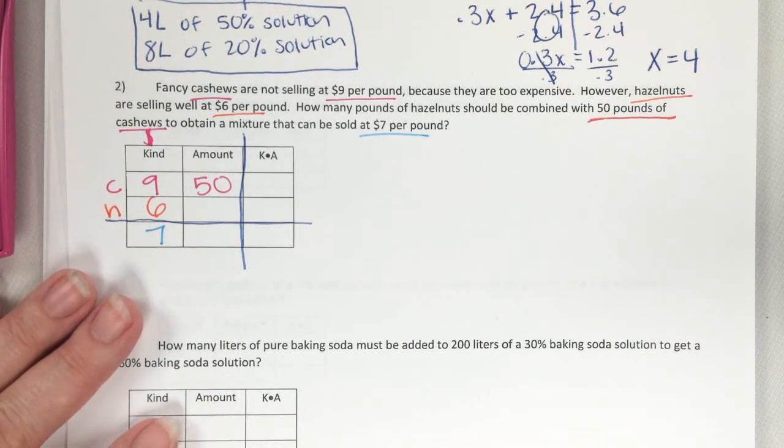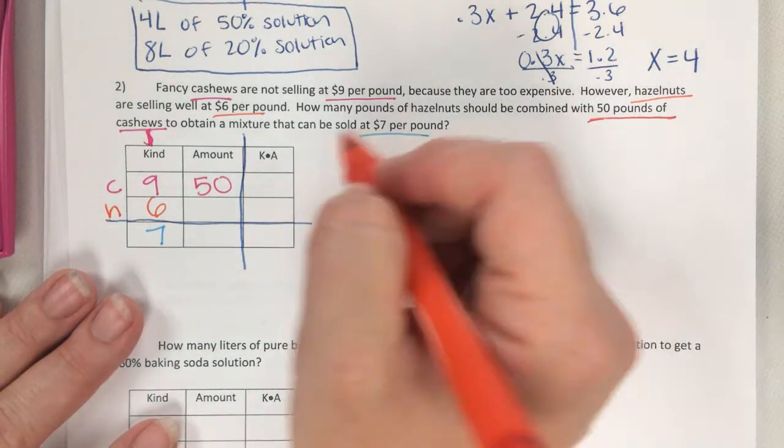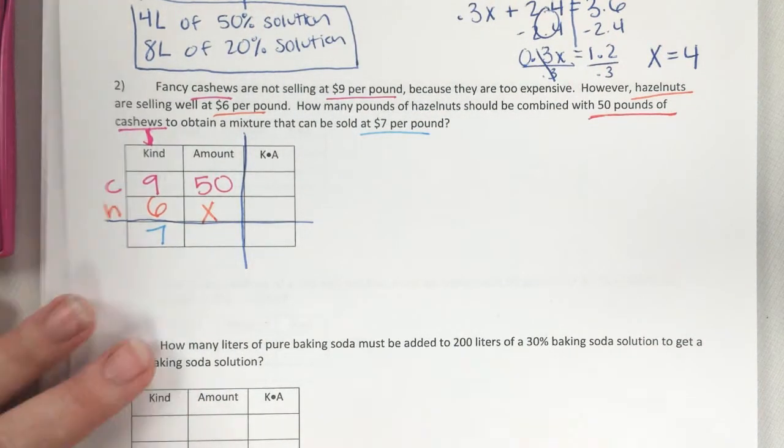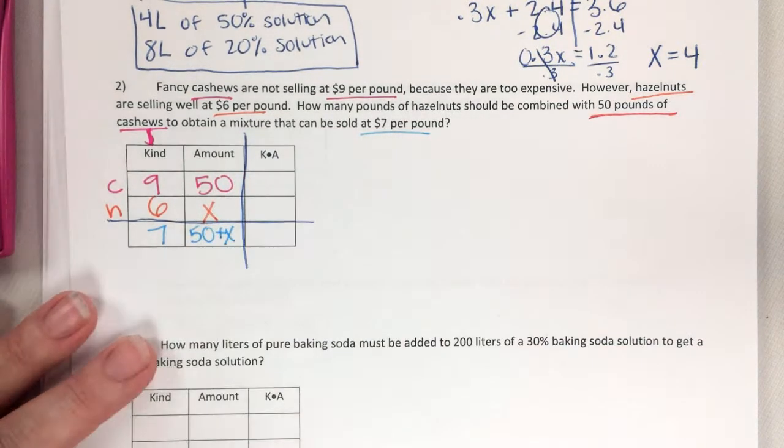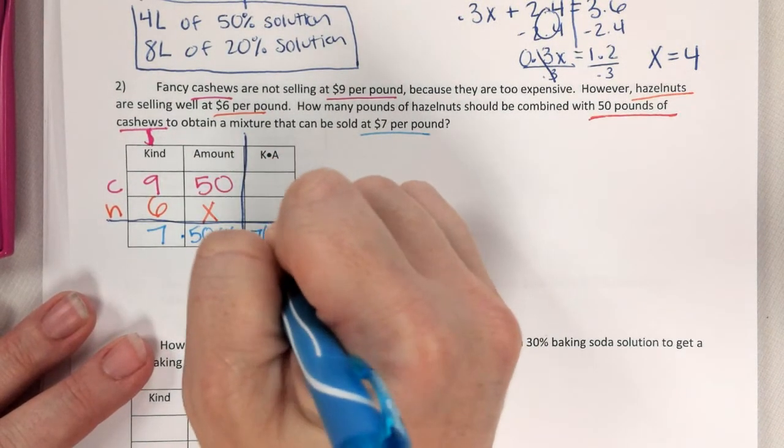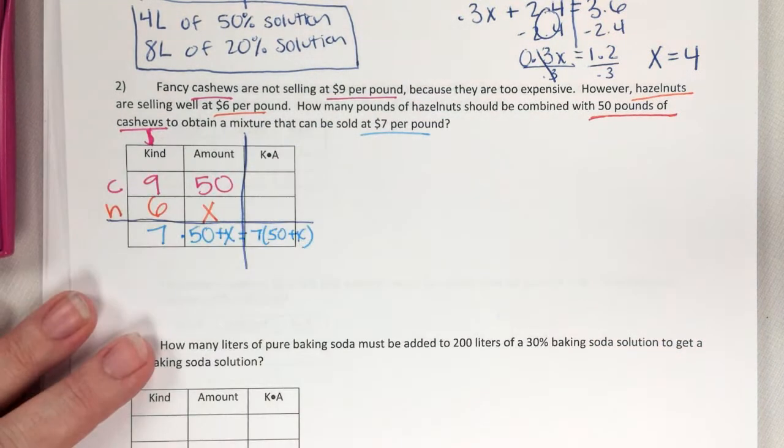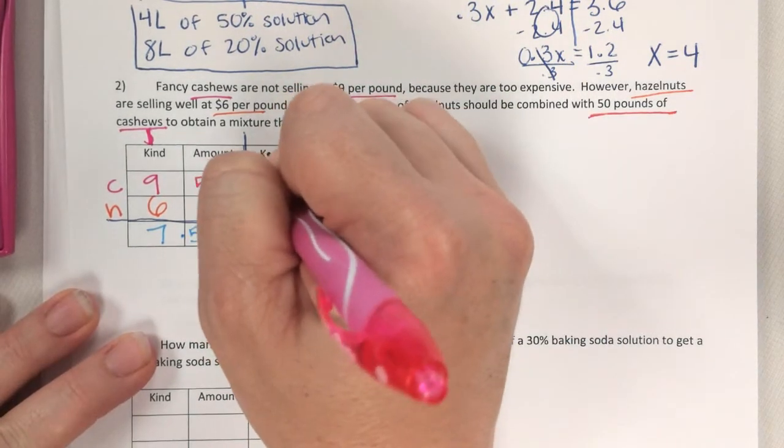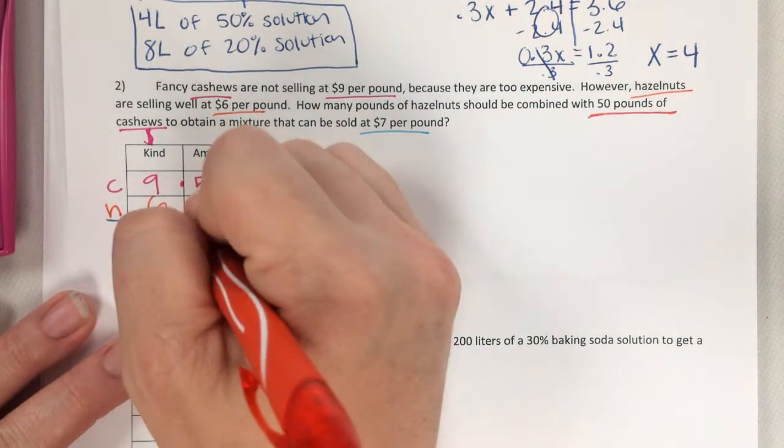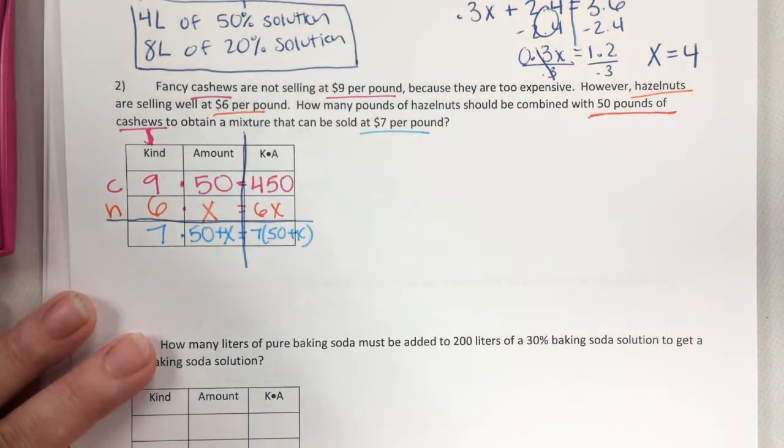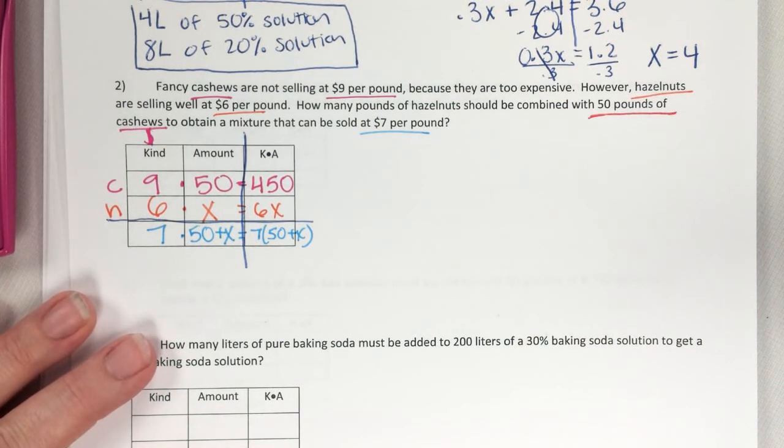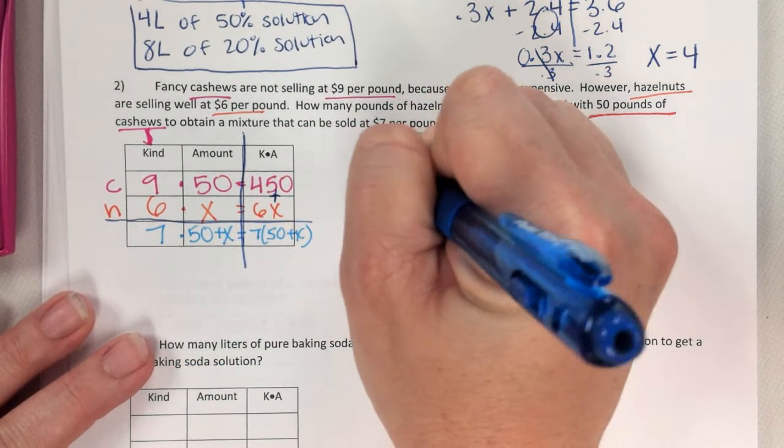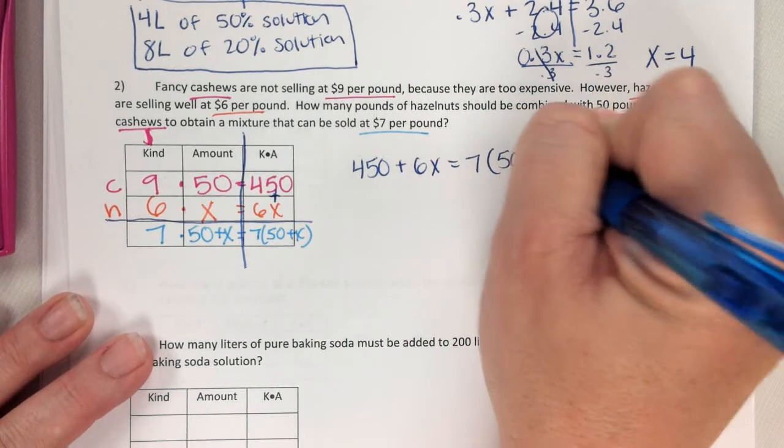Do I know how much hazelnuts I'm combining with that? No, it literally said how many pounds of hazelnuts. We don't know. Then for our total, remember, amounts are just added. And now we multiply across. 9 times 50 is 450. And then 6 times X is just 6X. And remember, that's the hard part. So now we're just adding to equal. So 450 plus 6X equals 7 times 50 plus X.